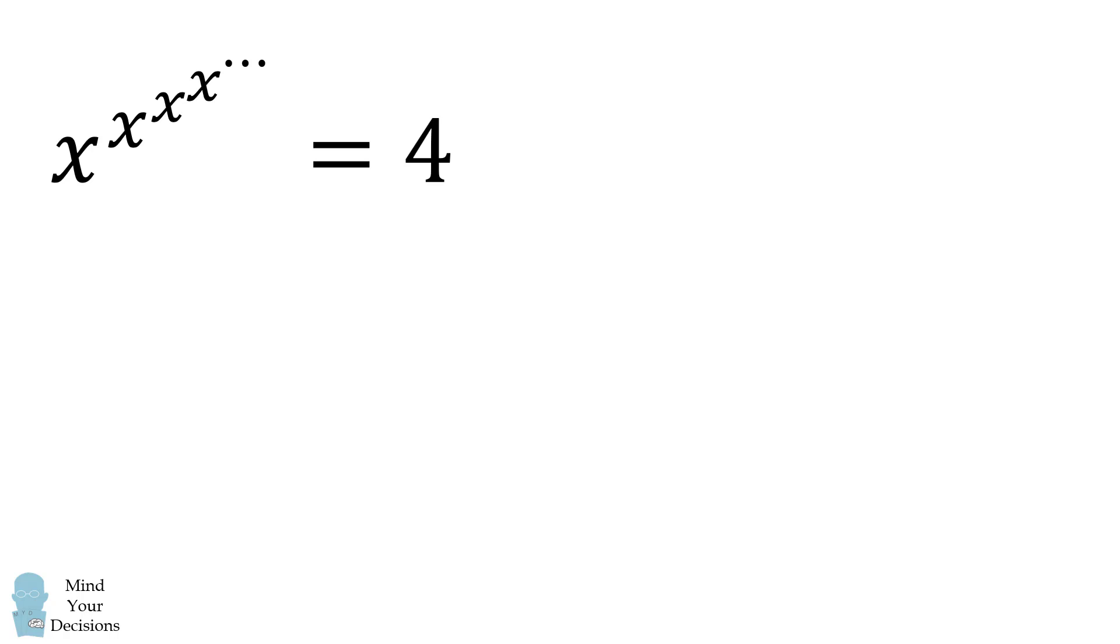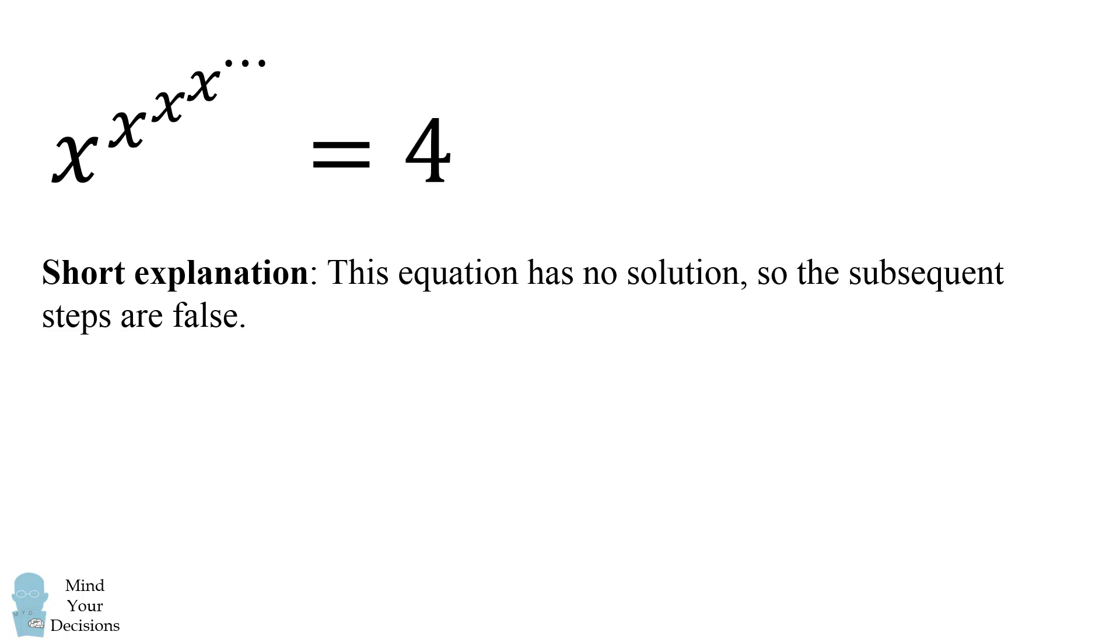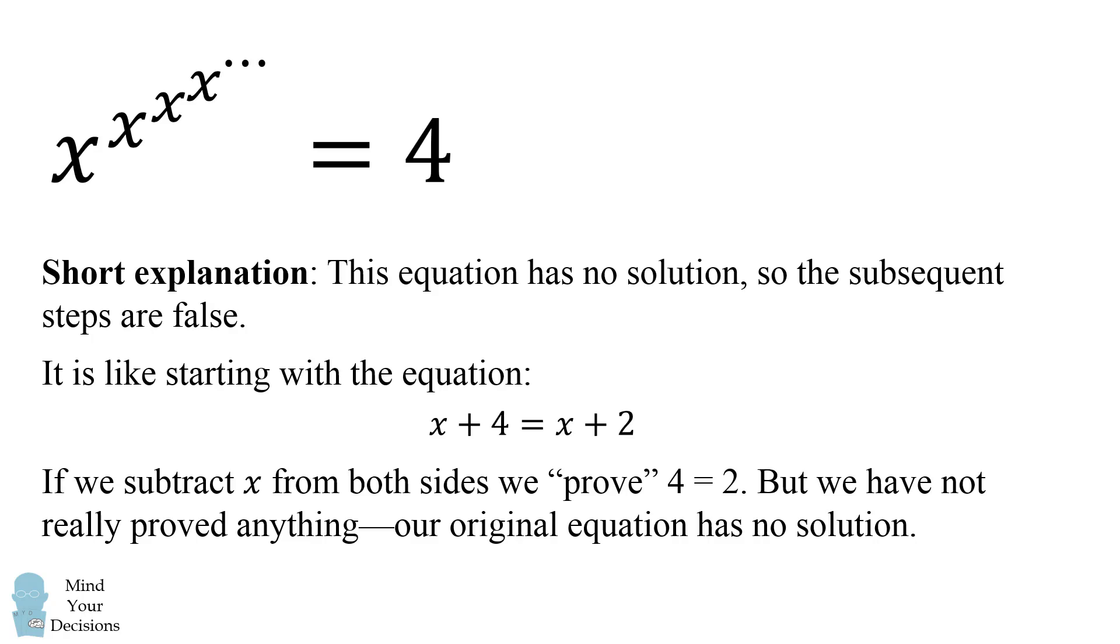Here's a short explanation. This equation, where x raised to the power of x infinitely many times is equal to 4, this is the mistake. This equation actually has no solution, so any subsequent steps are not true. It's like starting out with the equation x plus 4 is equal to x plus 2. You could subtract x from both sides, and you would seemingly prove that 4 is equal to 2.